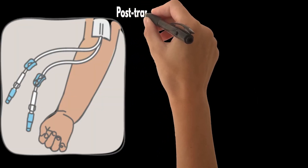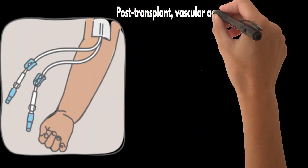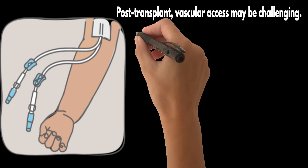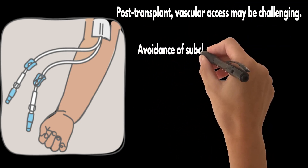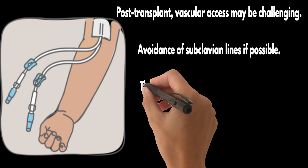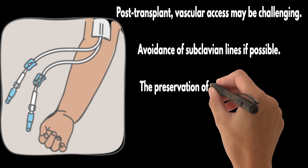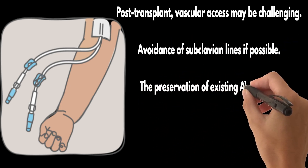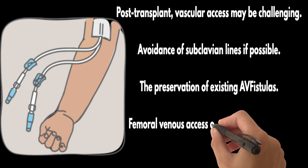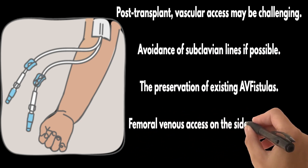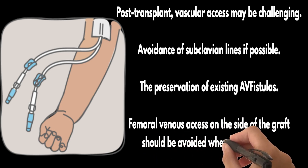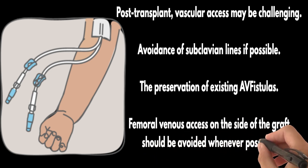Post-transplant vascular access may be challenging because of previous vein thromboses and collateralization, whilst at the same time vascular access should be preserved, especially in patients at risk of transplant failure. This includes the avoidance of subclavian lines if possible and the preservation of existing arteriovenous fistulas. Femoral venous access on the side of the graft should be avoided whenever possible.